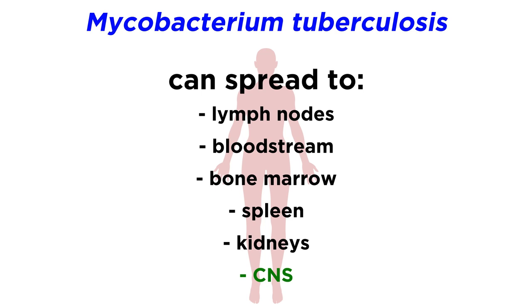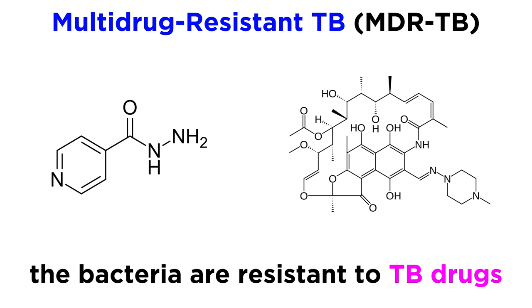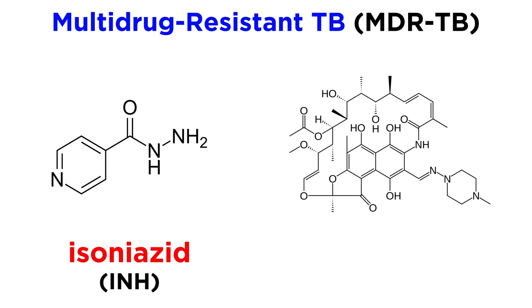Multi-drug-resistant TB, which is often abbreviated to MDR-TB, is a particular type of drug-resistant TB, meaning that the TB bacteria a person is infected with are resistant to two of the most important TB drugs: isoniazid, or INH, and rifampicin, or RMP.